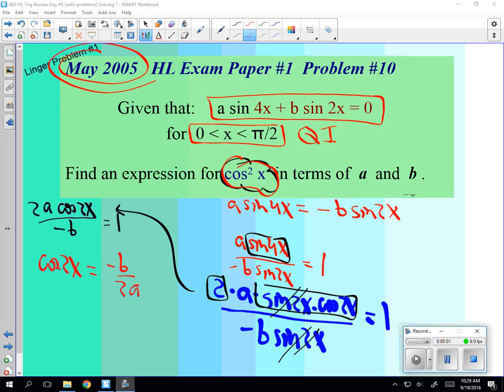So, set this equal to 2 cos squared x minus 1 equal negative b over 2a. And now, algebraically, you'll be able to solve for cos squared.